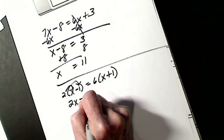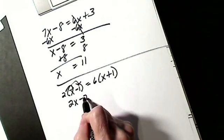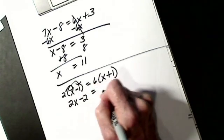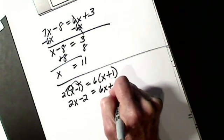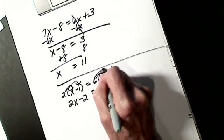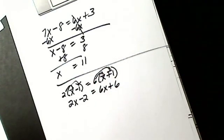2X minus 2 — make sure you understand why it's a 2 and not a 1 — equals 6X plus 6. I have to multiply the 6 through each term in the parentheses.